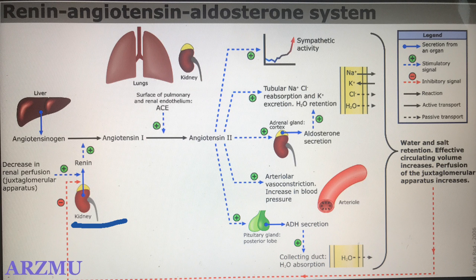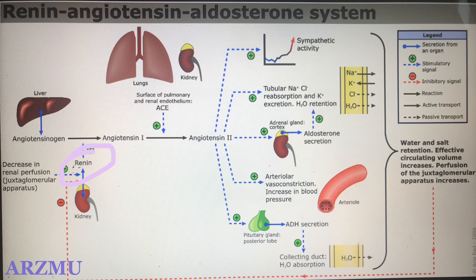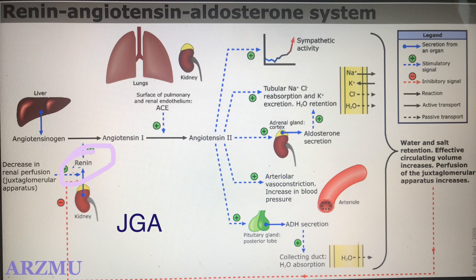The RAAS is mainly comprised of three hormones: renin, angiotensin 2, and aldosterone, primarily regulated by the rate of renal blood flow. The first stage of the renin-angiotensin-aldosterone system is the release of the enzyme renin.